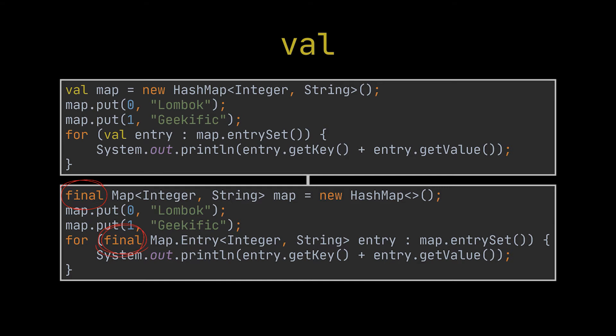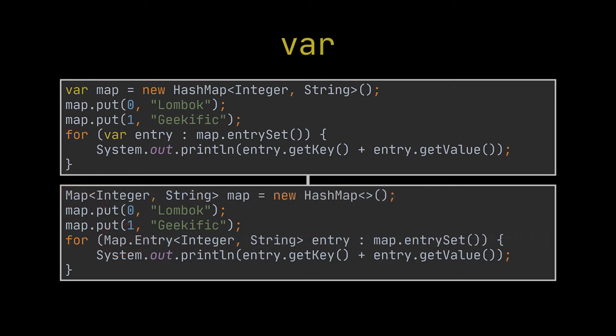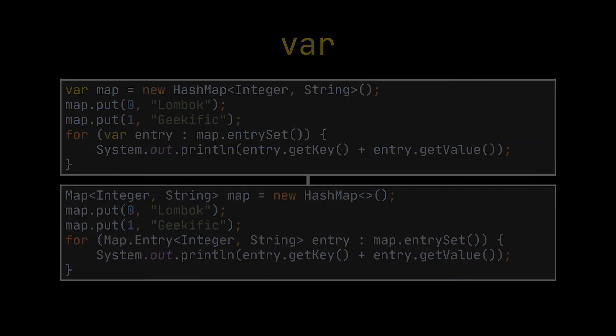Note that adding val before a variable will mark it as final, meaning that you won't be able to instantiate it again. This leads to the second feature: var. Var works exactly as val does, but the difference is that variables declared with var are not marked as final and therefore can be reinitialized or assigned multiple times. This one is not used as much as val because Java already provides a var feature that does exactly the same thing.